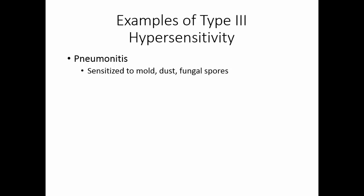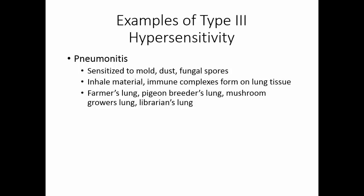Some examples of type 3 hypersensitivity include pneumonitis. In pneumonitis, someone is sensitized to mold, dust, or fungal spores — something that they inhale. As they inhale this material, they develop antibodies, and these antibodies coat up the lung tissue. So when they inhale the material repeatedly, these immune complexes form on the lung tissue, and we have that chronic inflammation that does damage. Things like farmer's lung, pigeon breeder's lung, mushroom grower's lung, and librarian's lung are all types of pneumonitis. In farmer's lung, they become sensitized to the mold that grows in hay. In pigeon breeder's lung, they become sensitized to dust and material in pigeon feces. Mushroom grower's lung is from mold spores found in mushrooms, and librarian's lung is from inhaling dust in old books.